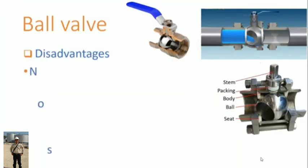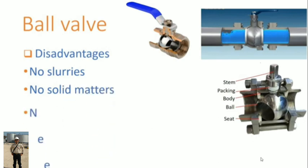Disadvantages: Ball valve is not suitable for slurries; also, solid matters can damage the sealing surfaces. Those are happening due to its dead space. And ball valve needs proper maintenance.